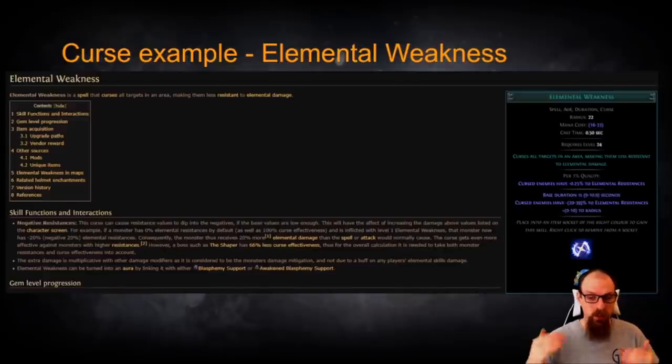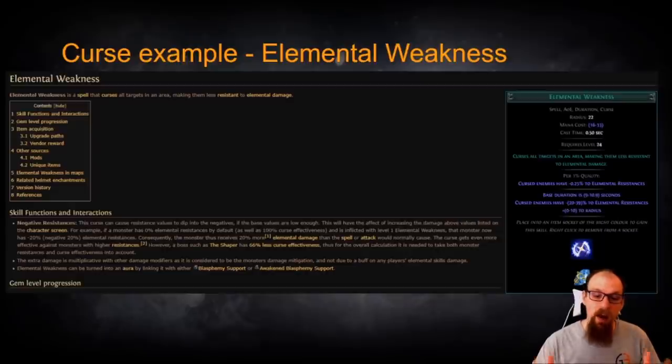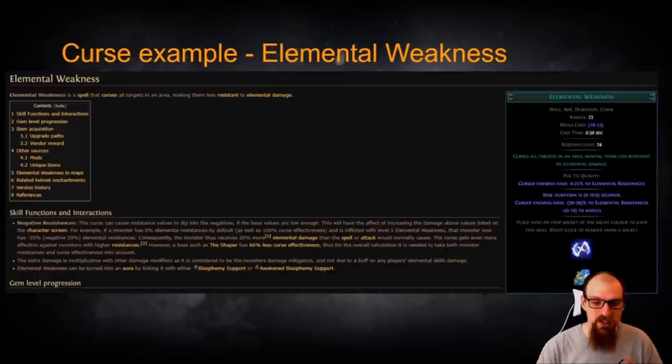That's right, ladies and gentlemen. You can curse stuff, reduce their resistances to negative which then acts as a more multiplier. The curse gets even more effective against monsters with higher resistances. However, a boss such as the Shaper has 66% less curse effectiveness thus for the overall calculation it is needed to take both the monster resistances and the curse effectiveness into count.